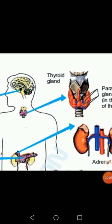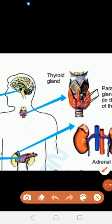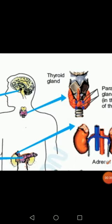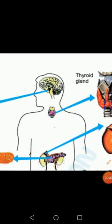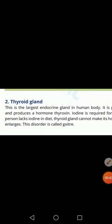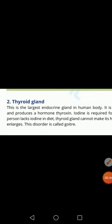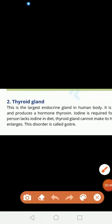The thyroid gland is present in the neck region, below the larynx. The thyroid gland secretes two hormones: thyroxine and calcitonin.